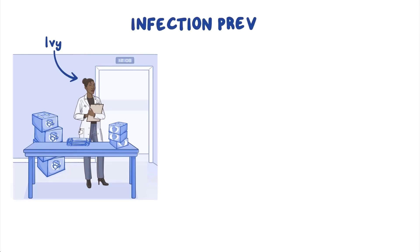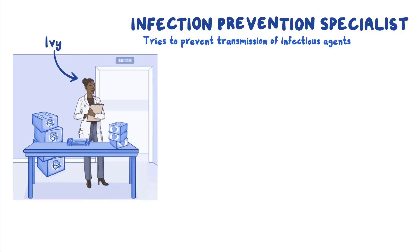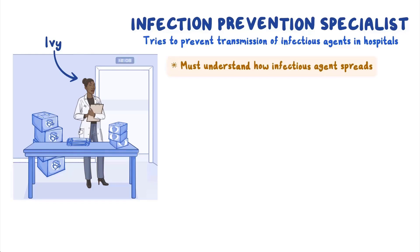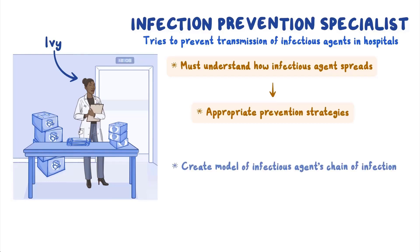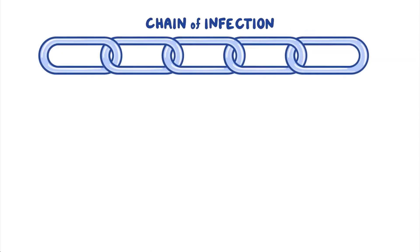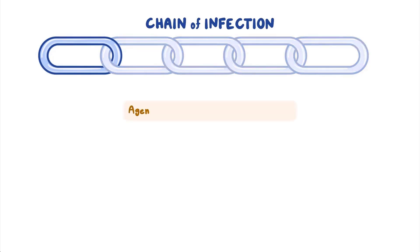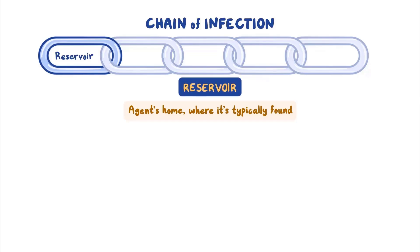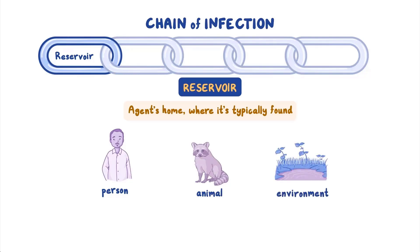Meet Ivy, an infection prevention specialist whose responsibility is to prevent transmission of infectious agents in a variety of settings such as hospitals and other healthcare facilities. Ivy must understand how each infectious agent spreads to put appropriate prevention strategies in place. To help her visualize this, she can create a model of the infectious agent's chain of infection. Let's look at each step of the chain of infection. First, what may be thought of as an infectious agent's home — the place where it's typically found — is called its reservoir. Depending on the agent, the reservoir might be a person, an animal, or even something in the environment, like water or soil.